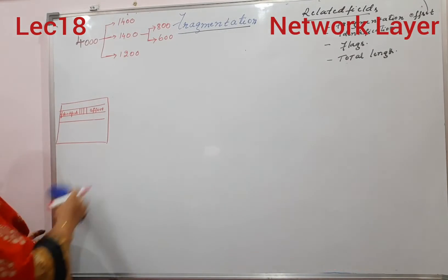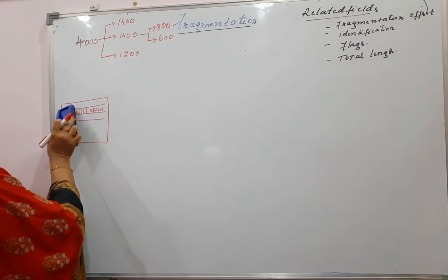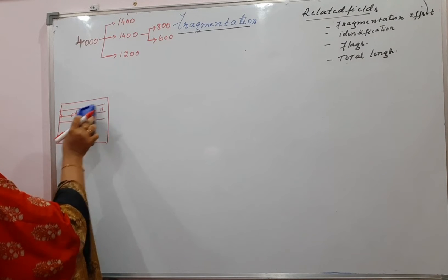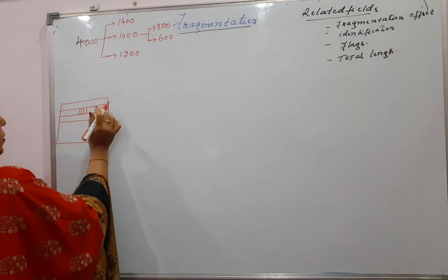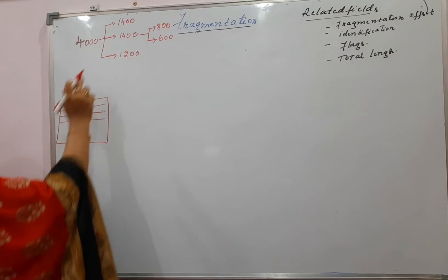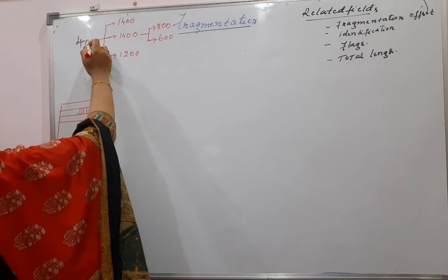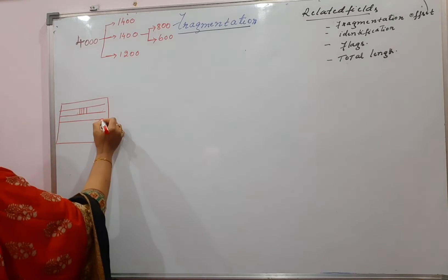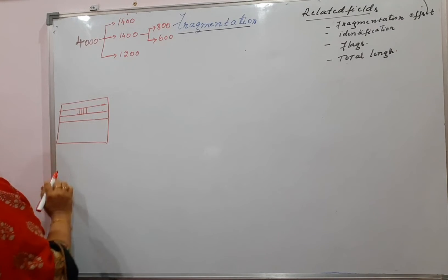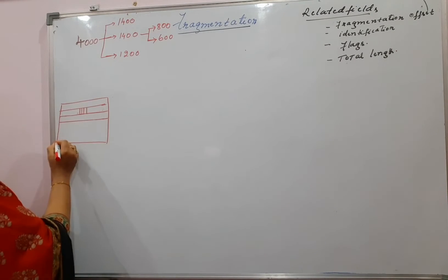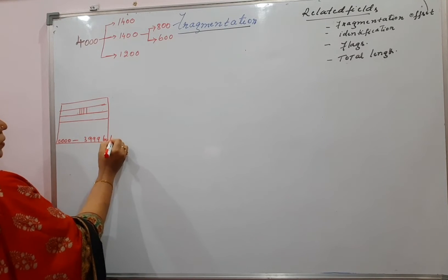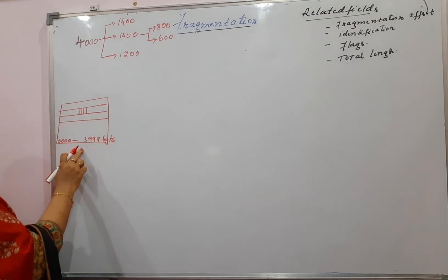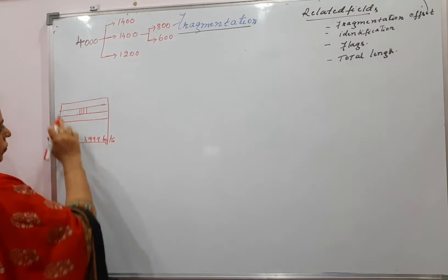Let us take the example for the fragmentation. I will just erase the names of the fields and we will fill the actual values here. Let us take, for example, the original datagram is 4000. This is the original datagram and it has got 4000 bytes, and the range of bytes is 0 to 3999. You can write this particular value in the format.